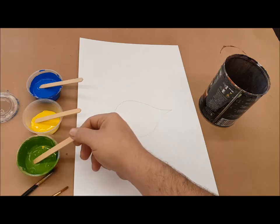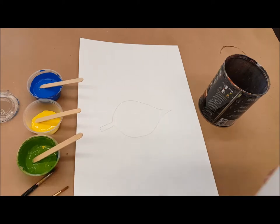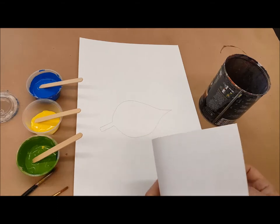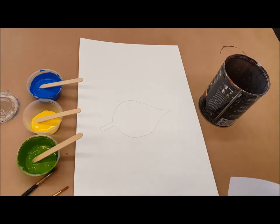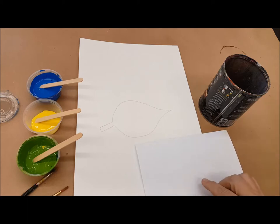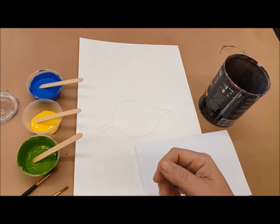I like to use popsicle sticks to help keep the colors clean. I also take plain old copy paper, fold it in half, and then I use that as a place where I can mix my colors so that my colors in my cups stay clean.